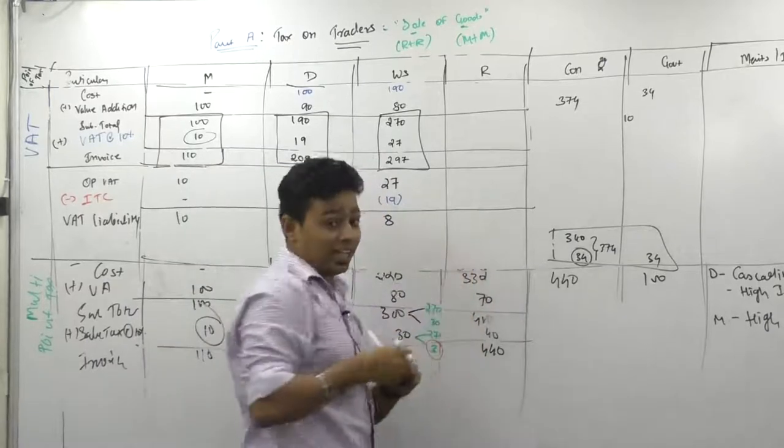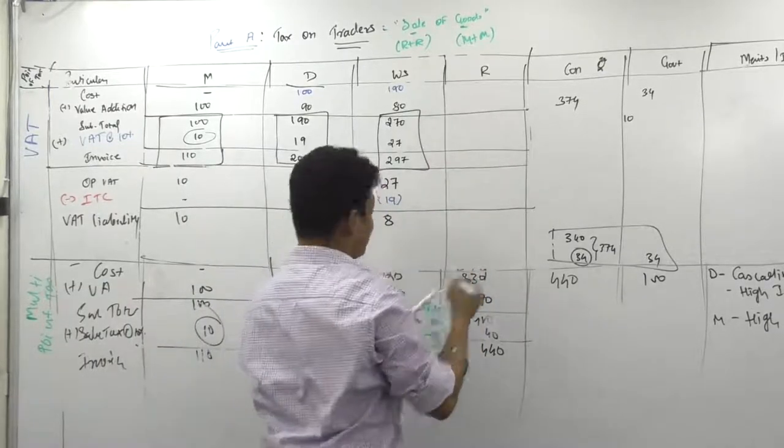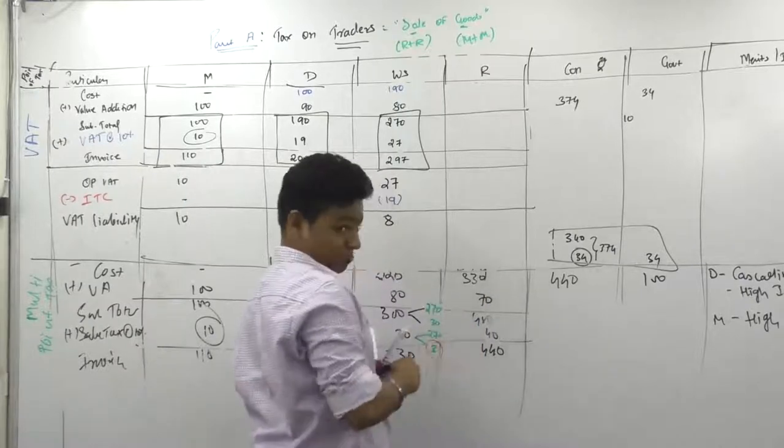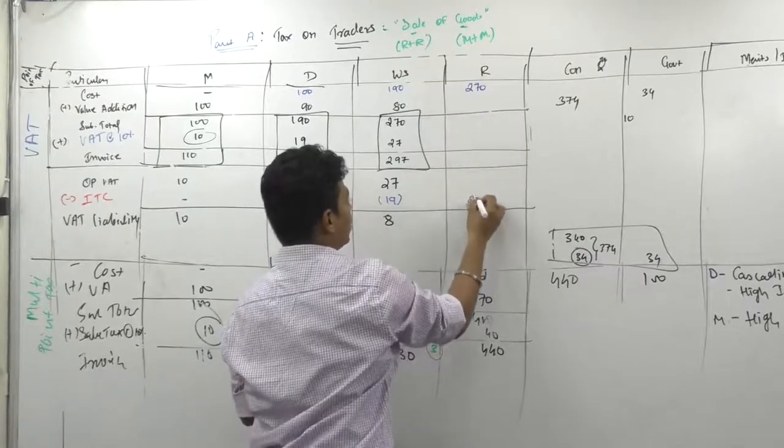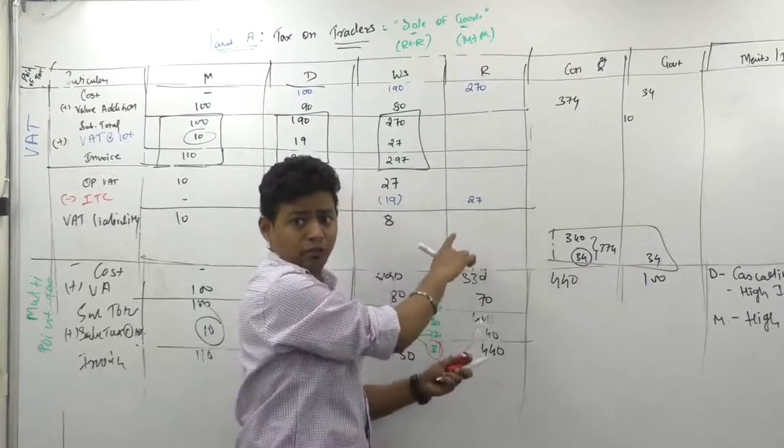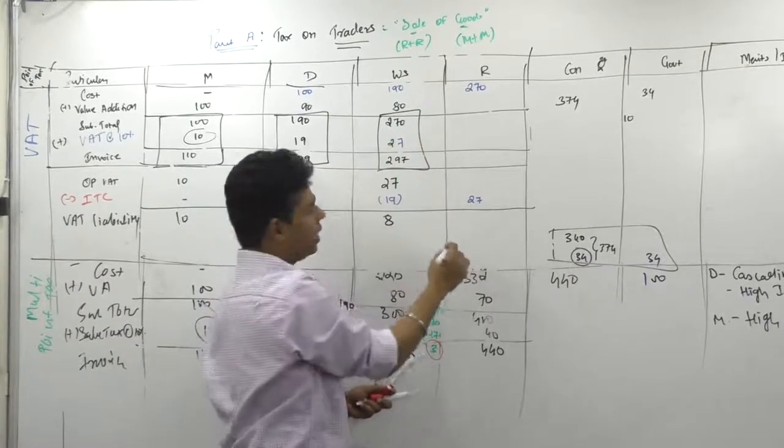Again intelligent answer I am expecting. What is the cost for this guy? 270. What is his coupon? 27. How do you know this is 27? Because he paid 27. So it is 27. Very good.